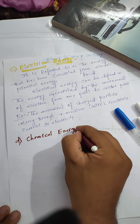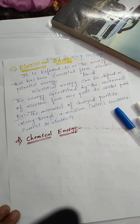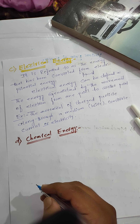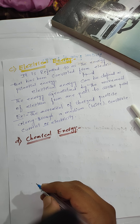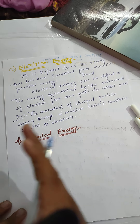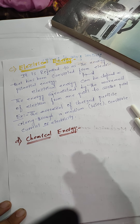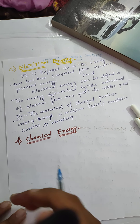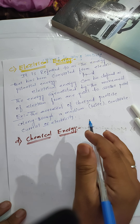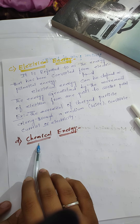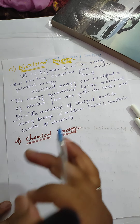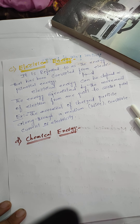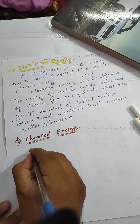Chemical energy is the energy stored in the bonds of a chemical compound. Chemical energy may be released or absorbed during a chemical reaction in the form of heat. Such reactions are called exothermic reactions. For example, the burning of wood, as well as the food we eat, are examples of chemical energy.